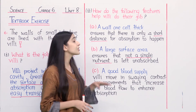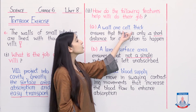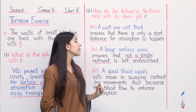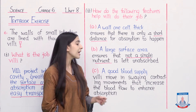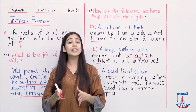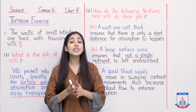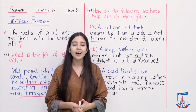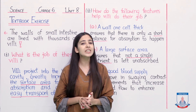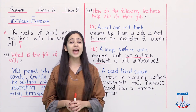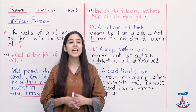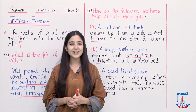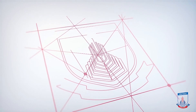So the three features of villai that we studied are: first, the wall or membrane is only one cell thick; second, its surface area is very large; and third, its blood supply is very good. These three features help the villai do their job effectively. I hope you understood this very well. With this, we have completed the textbook exercise of chapter number 8 on food and digestion. See you in the next lecture. Take good care of yourself. Khuda Hafiz.